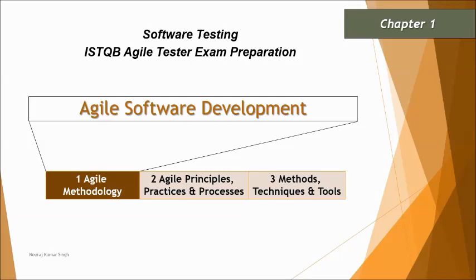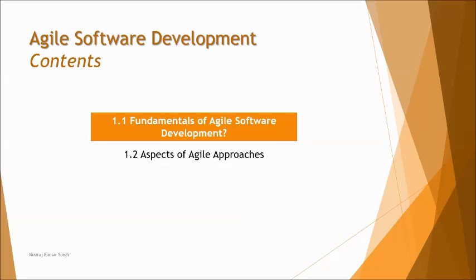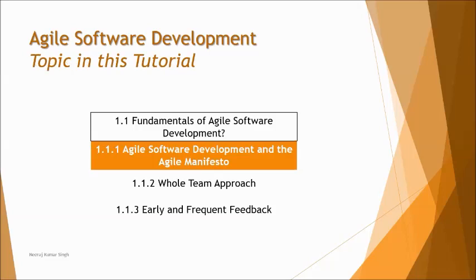We'll be breaking up the content into three chapters as per the syllabus and looking into the details of each topic. We are in chapter one today, which has two subtopics: fundamentals of agile software development and aspects of agile approaches. In this tutorial we'll be working on subtopic 1.1.1 — agile software development and the agile manifesto.